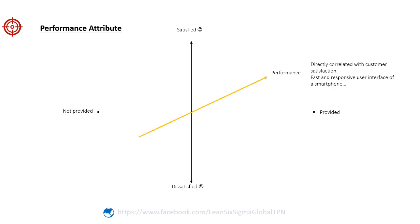Performance attributes are directly correlated with customer satisfaction. They are features that customers explicitly look for and appreciate in a product or service. In other words, meeting or exceeding customer expectations in these areas tends to increase satisfaction. The more a company focuses on enhancing performance attributes, the higher the level of customer satisfaction is likely to be. For example, one performance attribute of a smartphone could be a fast and responsive user interface. Customers look for a seamless and smooth user experience, and meeting or exceeding their expectations in terms of performance will significantly contribute to their satisfaction.